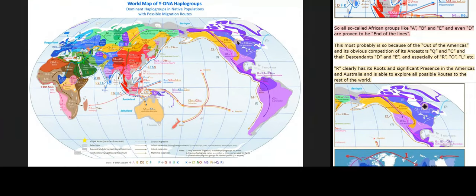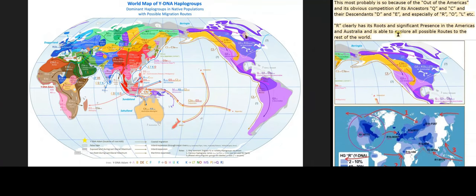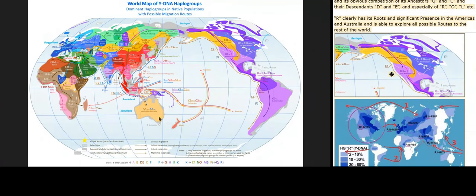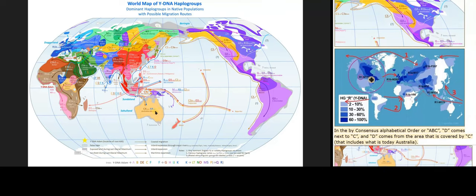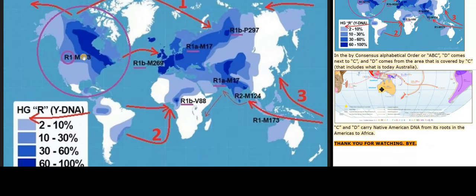R clearly has its roots and significant presence in the Americas and Australia and is able to explore all possible routes to the rest of the world. In the by-consensus alphabetical order or ABC, D comes next to C, and D comes from the area that is covered by C, which includes what is today Australia. C and D carry Native American DNA from its roots in the Americas to Africa. Thank you for watching. Bye.